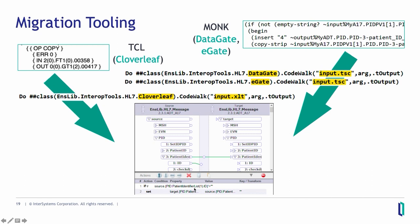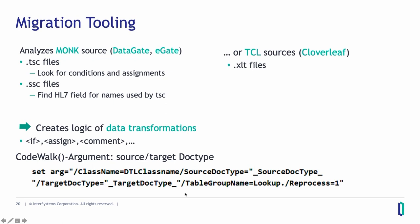The migration tooling analyzes your application. In Monk, there are TSC files where conditions and assignments are written, and SSC files where field names are defined — used in the TSC files. In Tcl, you have XMLT files. The migration tooling then creates the logic — if statements, assignments, and so on. If there is code it can't understand, it puts it in as a comment so you can review and implement it manually. The tools don't produce a 100% running application, but the plan is to do a big chunk of the work — everything that can be made automatically.